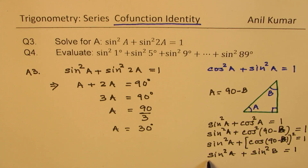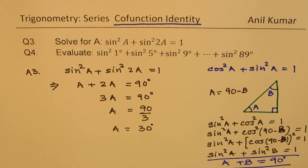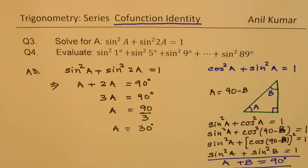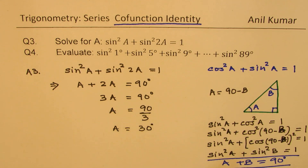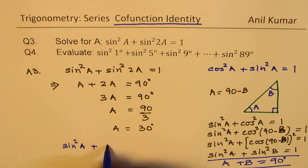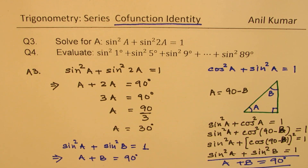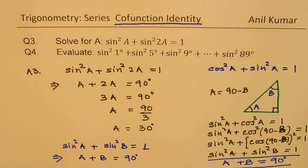So if we have sine square a plus sine square b equals 1, it basically means that a plus b equals 90 degrees — only then is it possible. So to summarize: whenever we have sine square a plus sine square b equals 1, that implies a plus b equals 90 degrees.